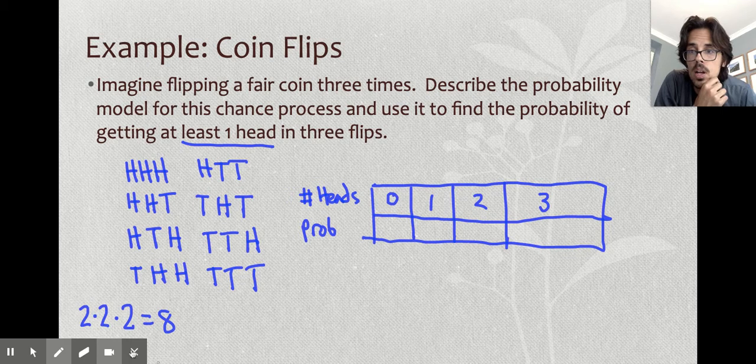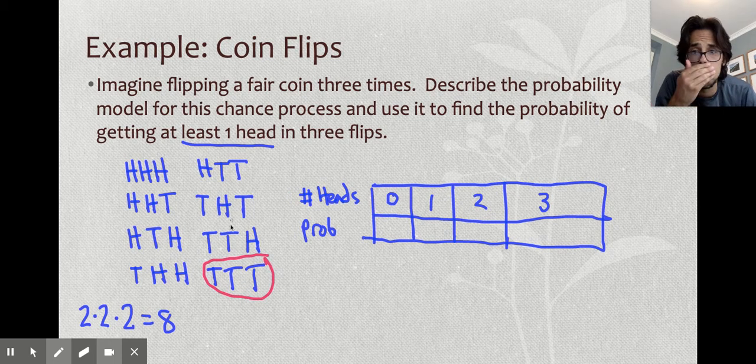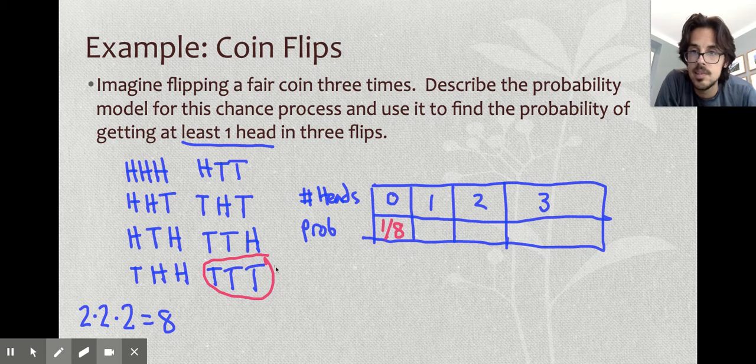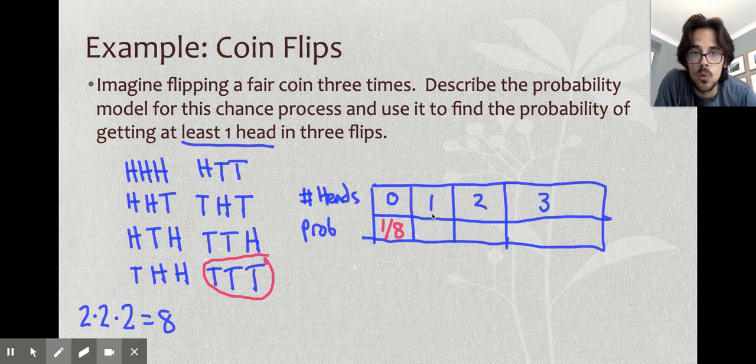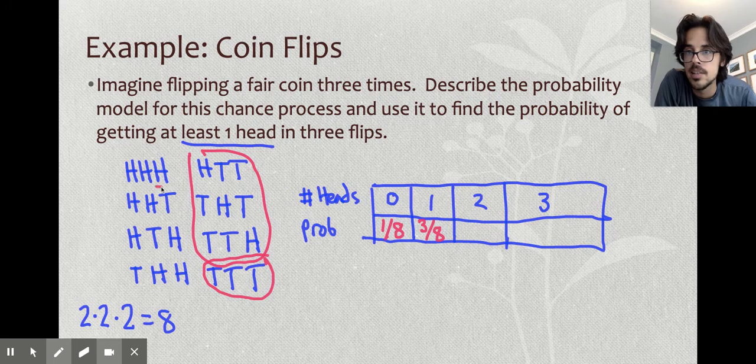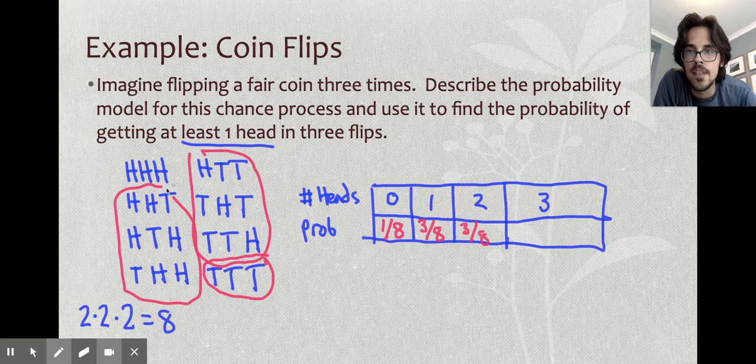Getting zero coins landing on heads is only possible one time. For probability, you just take it out of the total. There are eight possibilities that are all equally likely. So the probability of getting no coins landing on heads is one out of eight. One coin landing on heads is three out of eight. Two coins landing on heads is three out of eight. And all three landing on heads is one out of eight.